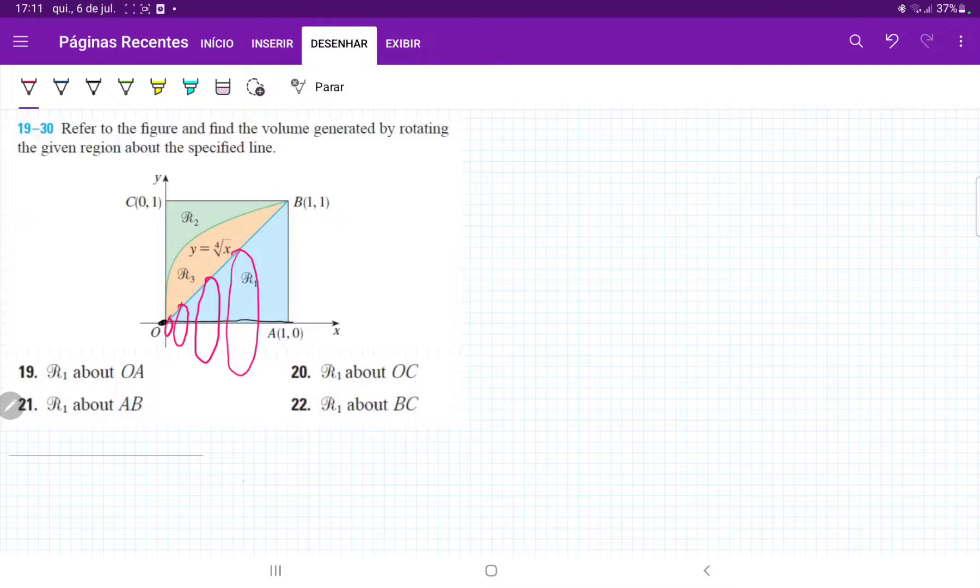So the closer I get to O, the smaller it's going to be. And then the closer I get to A, the bigger they're going to be, right? So we can see that actually this volume is going to be a cone when we revolve it like so.